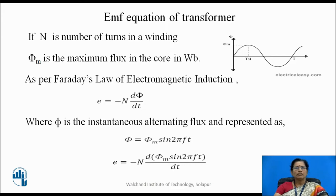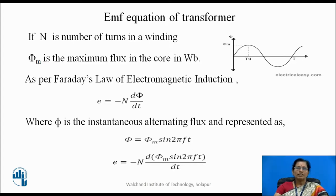If we consider N number of turns in the winding, and phi_M is the maximum flux in the core in Weber, then as per Faraday's law of electromagnetic induction, E is given by minus N dφ/dt, where φ is the instantaneous alternating flux represented as φ = φ_M sin(2πft). As the alternating voltage is connected to the primary of the winding, φ has the nature of AC. So we can write E = −N · d(φ_M sin(2πft))/dt.